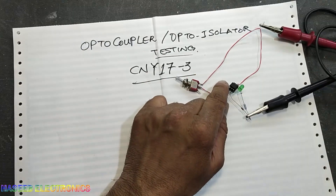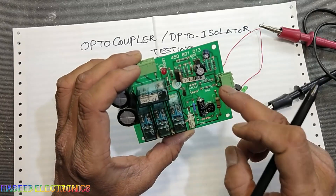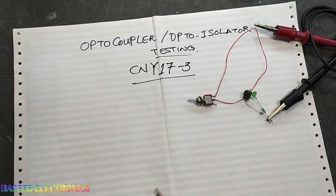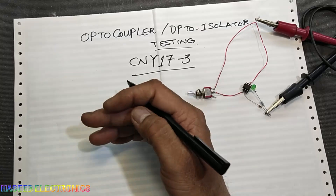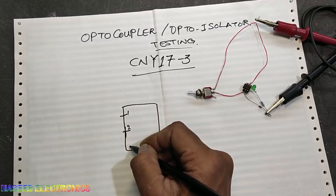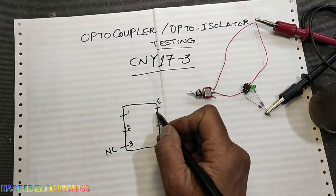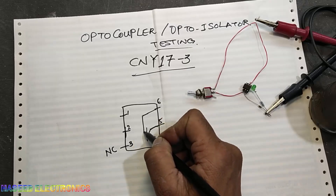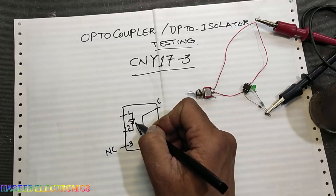It is a CNY17-3, an industrial standard optocoupler. The original optocoupler was not communicating properly. You can make a tester for any optocoupler very easily — just check the datasheet on Google and look at the pinout. For this optocoupler: pin 1 anode, pin 2 cathode (IR LED), pin 3 not connected, pin 4 external base, pin 5 emitter, pin 6 collector — NPN output.